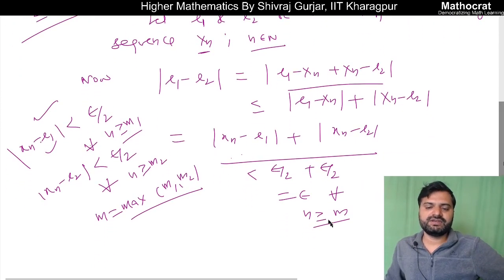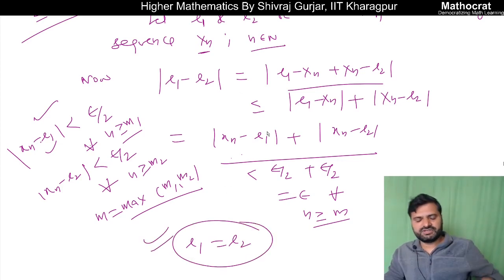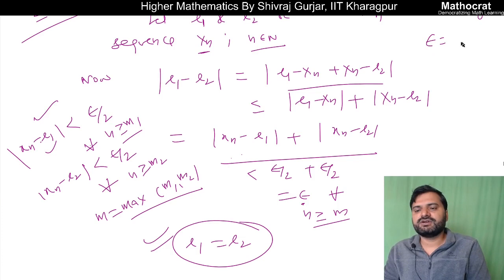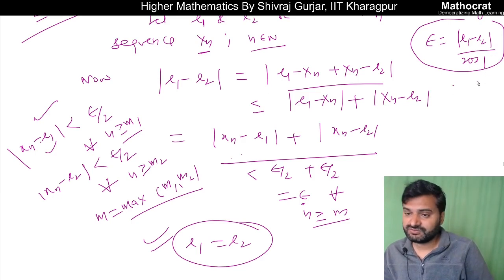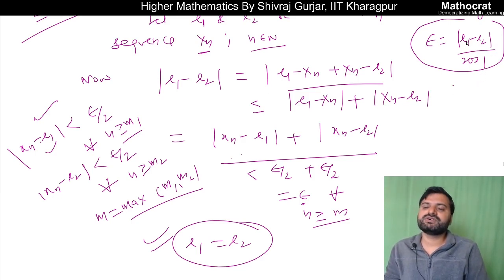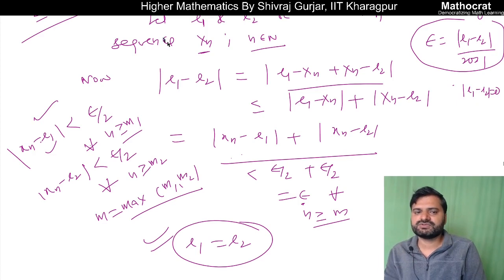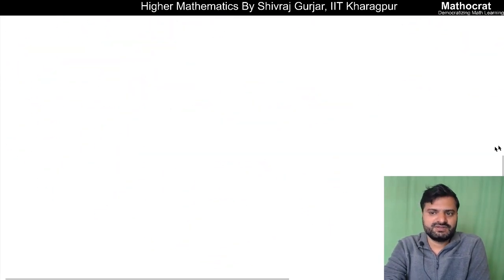This means L1 and L2 must be equal. So what we assumed — that L1 and L2 are different — is not true; they have to be equal. Because epsilon is our choice, we can choose epsilon equal to |L1 minus L2| divided by 2. Then we get |L1 minus L2| less than |L1 minus L2|, which is a contradiction. This is only true when |L1 minus L2| equals 0. So L1 and L2 are equal, meaning the limit of a sequence is always unique.